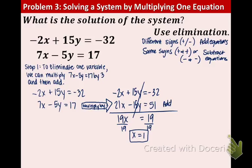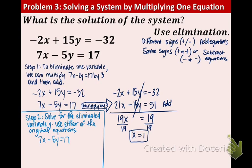Now step 2 is to find the eliminated variable y. And you can use either of the original equations. I think I will use the second equation just because it looks nicer. So we have the second equation and we're going to plug in 1 for x. We have 7 times 1 minus 5y equals 17. And that means we're going to subtract 7 to the other side. So we have negative 5y equals 10. And lastly, we're going to divide both sides by negative 5. And we're going to get negative 2. Y equals negative 2.